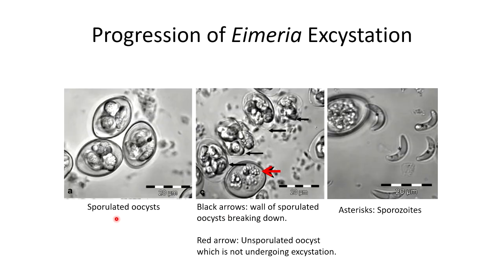Here's showing the progression of excystation, or the release of sporozoites. Here we have sporulated oocysts — you can see the sporocysts inside the oocysts. The black arrows show the wall of a sporulated oocyst breaking down, so these are actually undergoing excystation. The red arrow shows an unsporulated oocyst not yet undergoing excystation. In the third image, we see sporozoites have been released, labeled with asterisks.